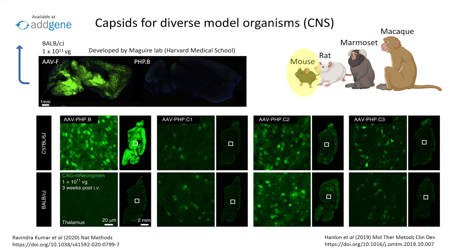PHP-B does not outperform AAV-9 in the brains of BALB-C mice. This is because PHP-EB and related AAV, including V1 and N, use the protein LY6A as a receptor for blood-brain barrier crossing. LY6A has two forms in mice, and these AAV can utilize only one of those forms. Both the Gratinaru and McGuire labs have identified new AAVs that did not have this limitation. However, PHP-EB still outperforms these AAV in mouse strains like C57BLK6 and others with functional LY6A, and PHP-EB remains a workhorse for mouse neuroscience.